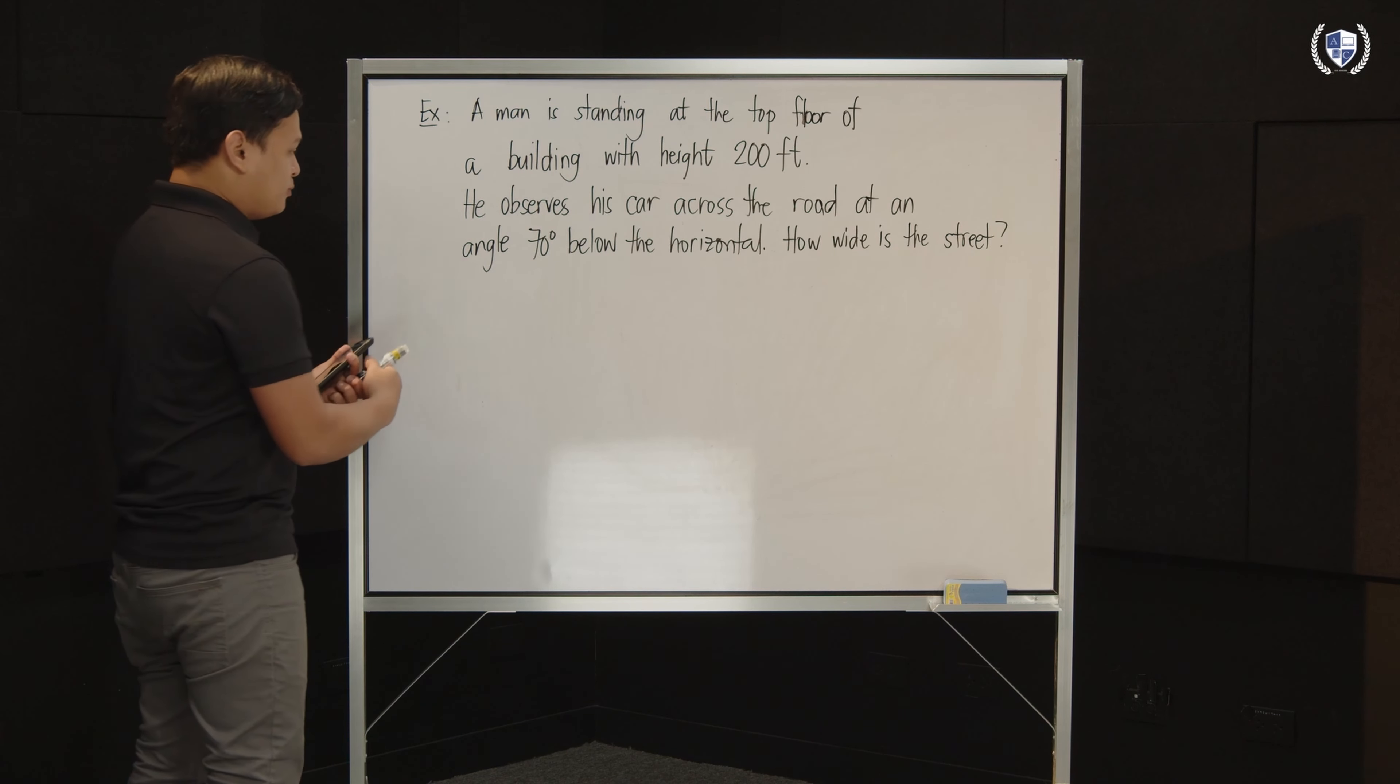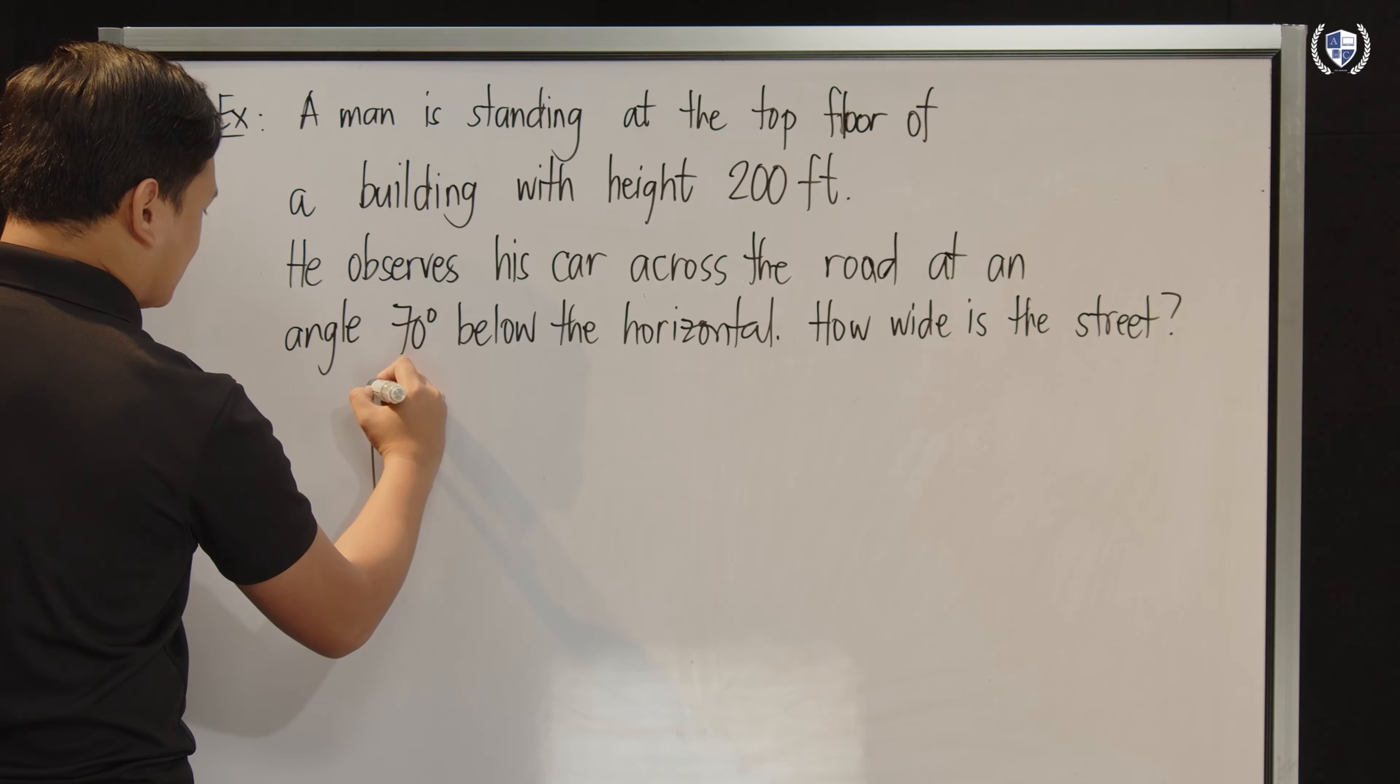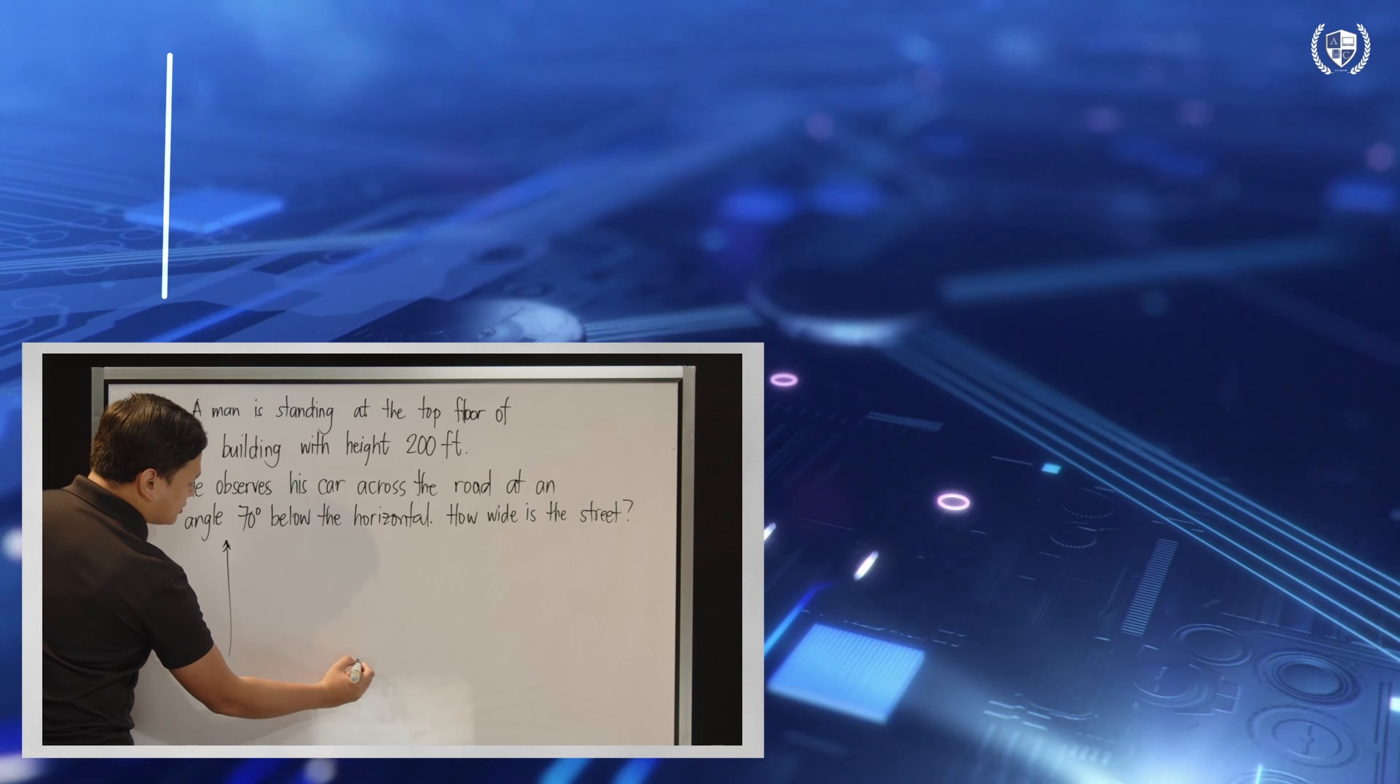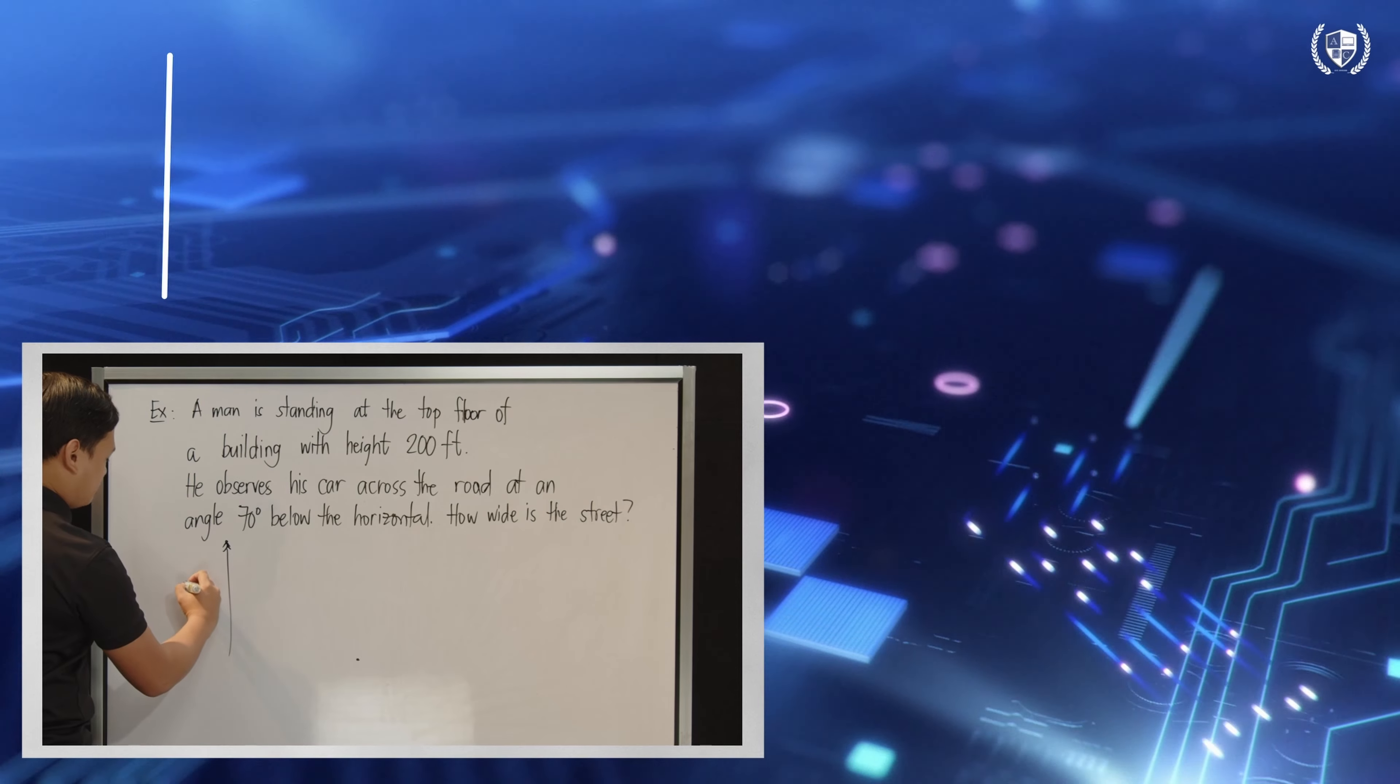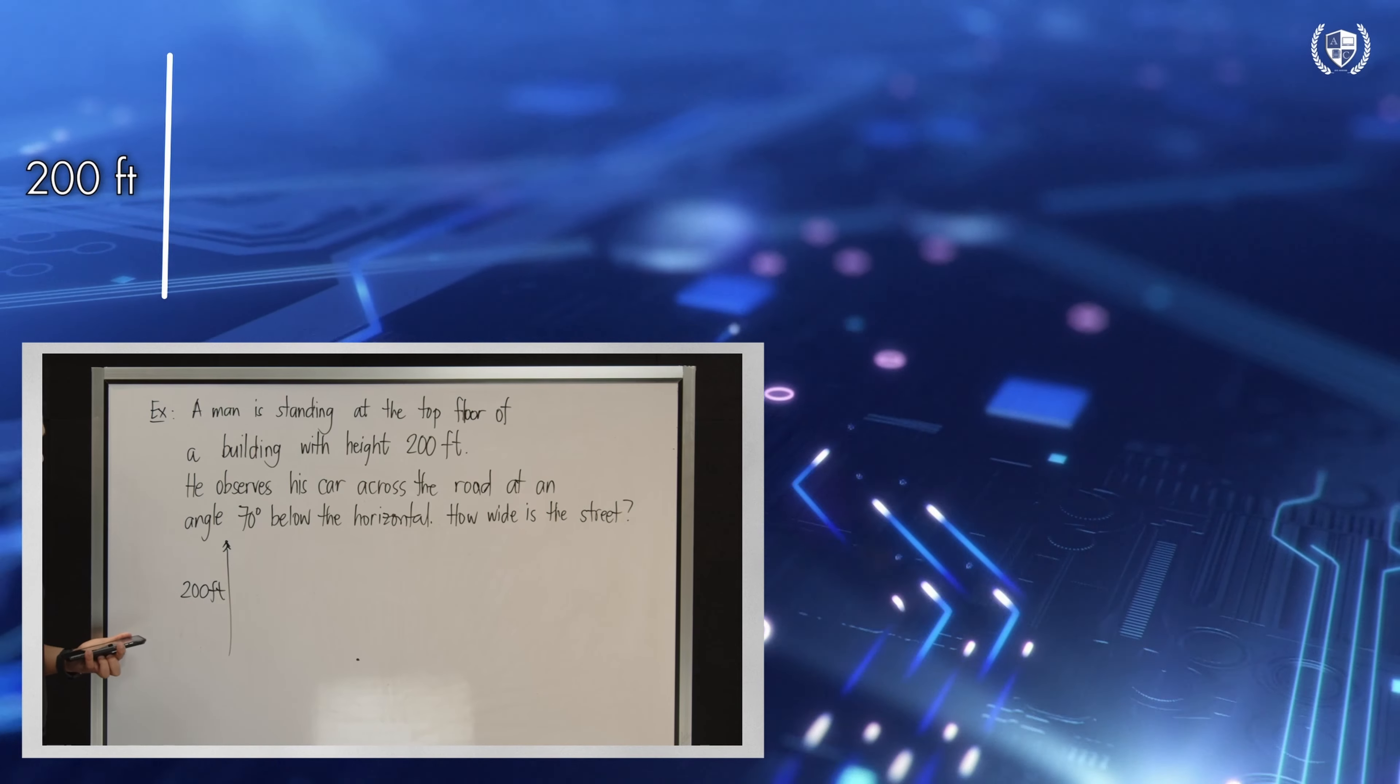How do we do that? Let's draw our building first. Let's say this is the building and the man is at the top. He's there. And then he has a car, and the car is across the road. So, it's over there on the other side. He's up high. And then, let's put the 200 feet. So, this height here would be 200 feet from the ground. That's your building.